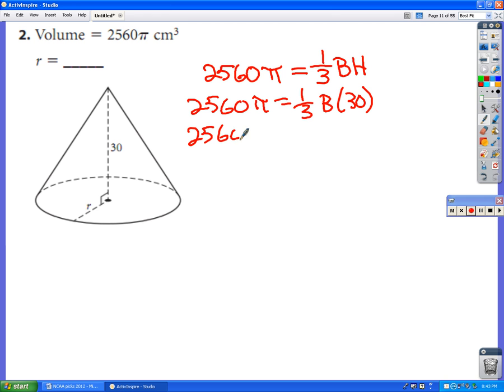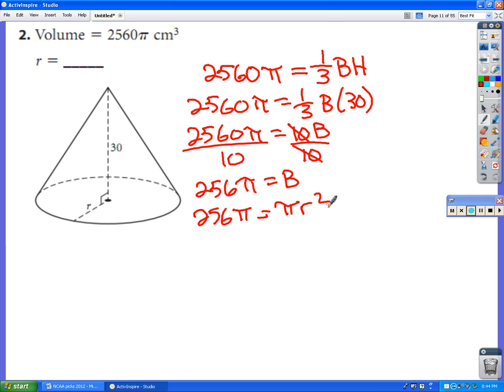So 2560π equals 10 times the area of the base. If I'm trying to solve for the area of the base, I divide both sides by 10. So that means 256π equals the area of the base. Well, the base is a circle. So the formula for its area is πr². The π on both sides will cancel.